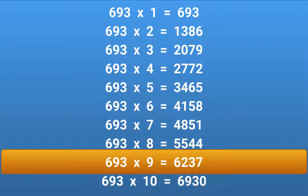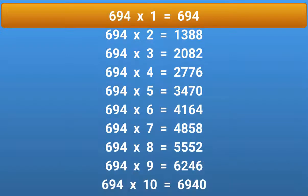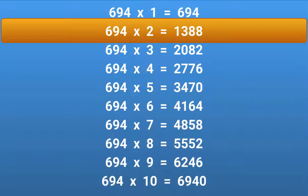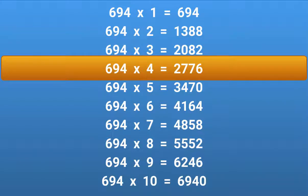693 × 9 = 6237. 693 × 10 = 6930. 694 × 1 = 694. 694 × 2 = 1388. 694 × 3 = 2082. 694 × 4 = 2776.